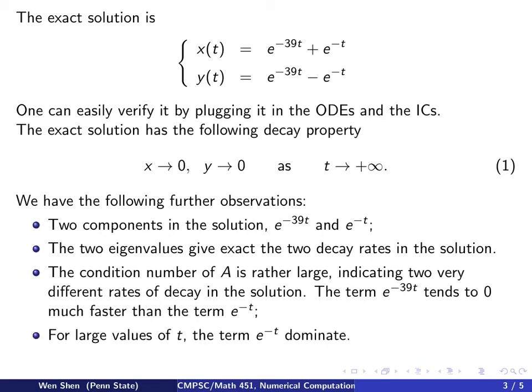So for large values of t, this term here for both x and y will dominate the solution, will be much bigger. So that term here with a very fast decay rate, e to the negative 39t, is often referred to as the transient term, because after a short while, it just becomes so small, it doesn't matter anymore.